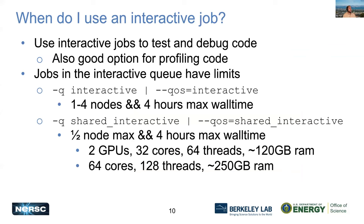Interactive jobs are good for profiling and debugging your code, because our interactive queues are shorter. Our interactive queue allows one to four nodes and only four hours of max wall time. We also have a shared interactive queue, where you go onto a node that other people are also on, but Slurm has allocated you a portion of that machine. You can get up to half a node with four hours max wall time — up to two GPUs, 32 cores, 64 threads, and about 120 GB of RAM on a GPU node; or 64 cores, 128 threads, and about 256 GB of RAM on a CPU node.